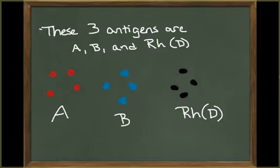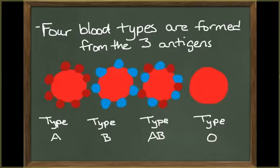These three antigens are A, B, and RH, otherwise known as D. Four blood types are formed based on these three antigens. Type A blood has only surface antigen A. Type B has only surface antigen B. Type AB has both A and B. Type O has neither A nor B.